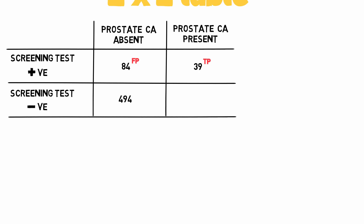494 patients where the screening test says negative for prostate cancer, and prostate cancer is actually absent — so a true negative. And finally, 76 patients where the screening test says negative for prostate cancer, but they actually do have prostate cancer — so this is a false negative.